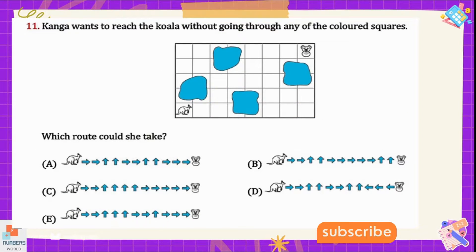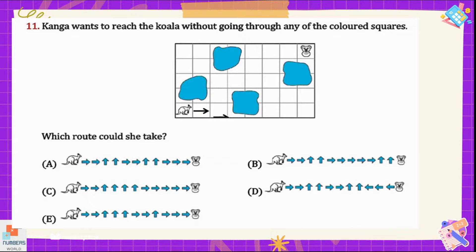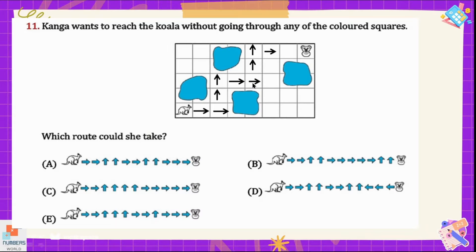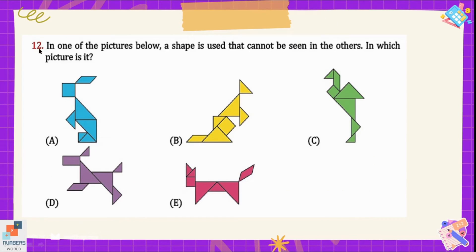Question number eleven: the kangaroo wants to reach the koala without going through any colored squares — which route could he take? The kangaroo can hop two jumps to the right, then two jumps up, then three jumps to the right to reach the koala. Taking three jumps to the right initially doesn't lead to an answer in the given options. So option A is the correct route.